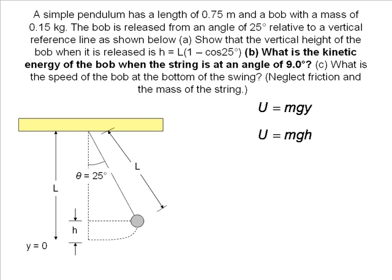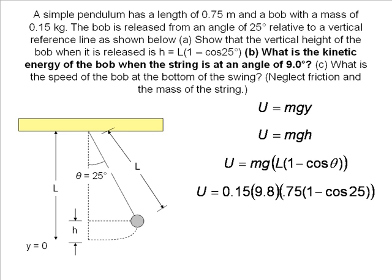We rewrite our potential energy formula with height of the pendulum bob. Substitute in what we found h was equivalent to, input our values, and find the potential energy before the bob was released. This is the total energy of the system.